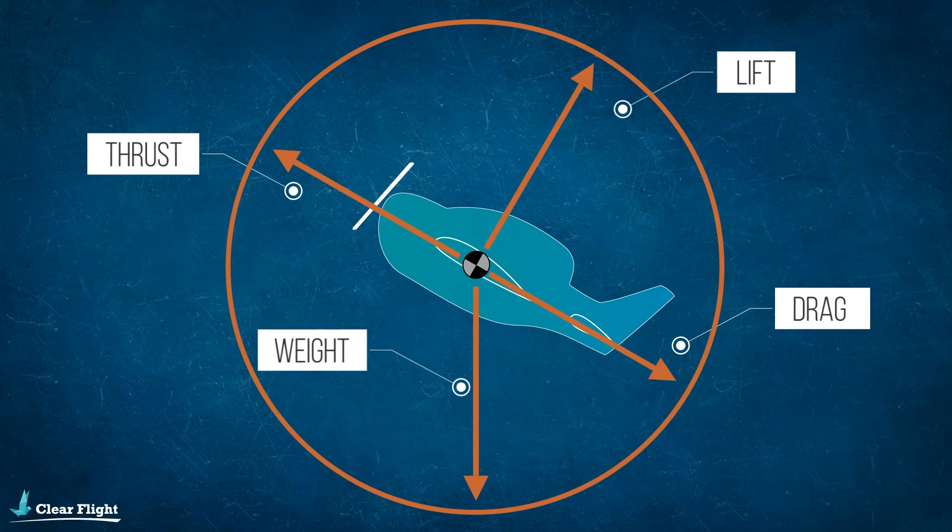Both weight and drag are acting rearwards, trying to prevent the aircraft from climbing. These two forces can be combined into one resultant force acting rearwards.